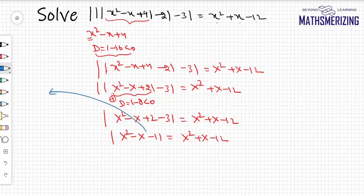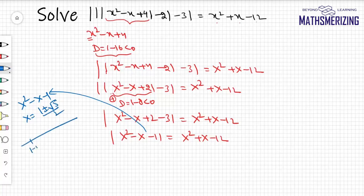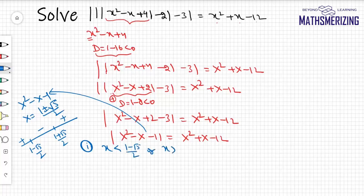Now for the expression x² - x - 1, the roots are (1 ± √5) / 2, giving roots (1 - √5)/2 and (1 + √5)/2, with sign pattern: positive, negative, positive. Case 1: when x < (1 - √5)/2 or x > (1 + √5)/2, the function x² - x - 1 is positive.